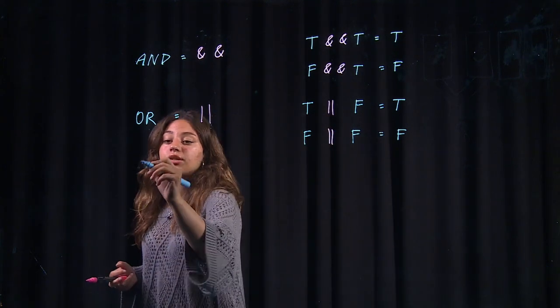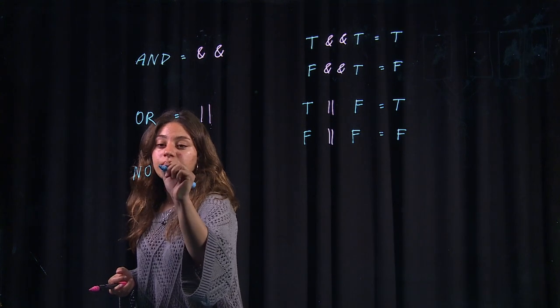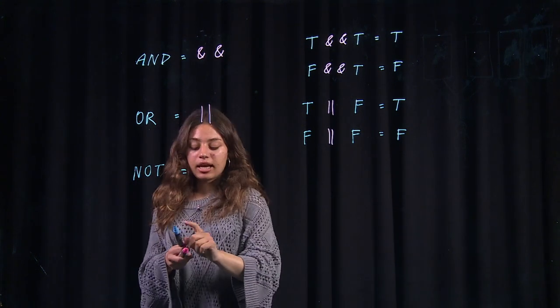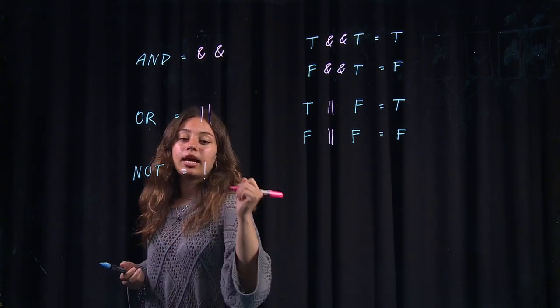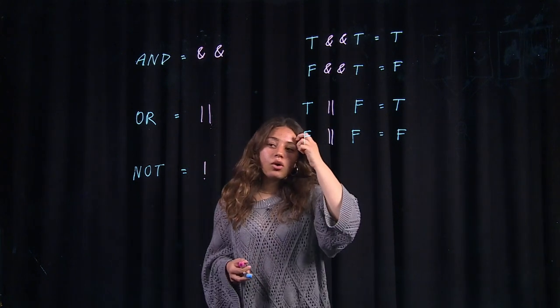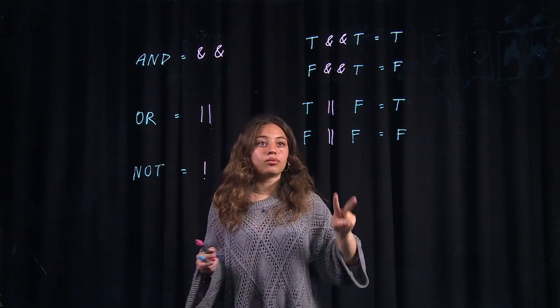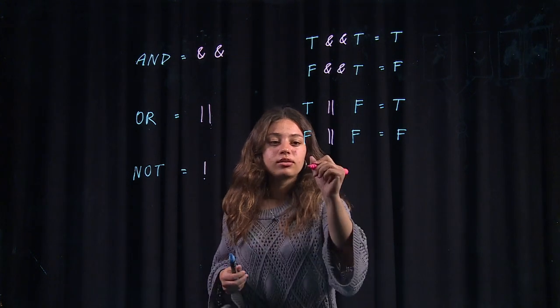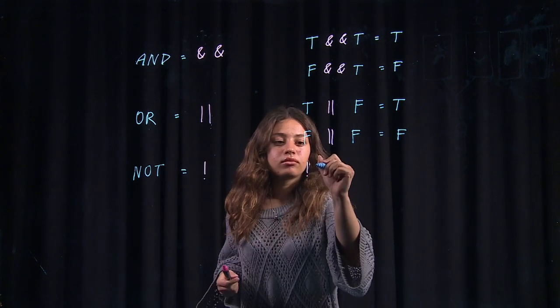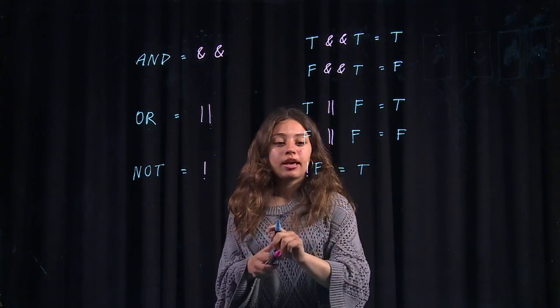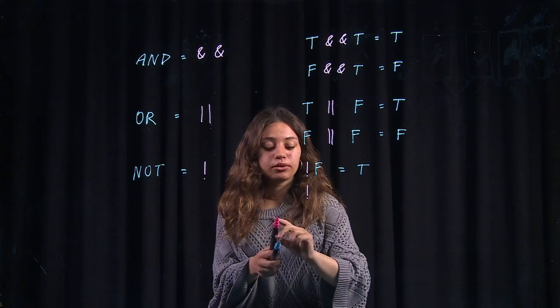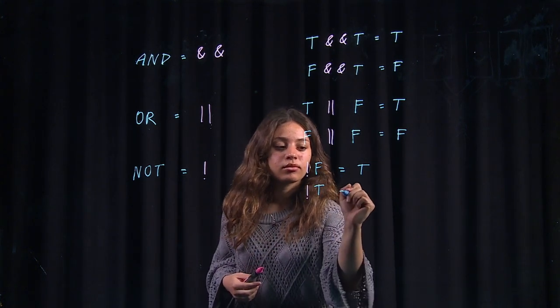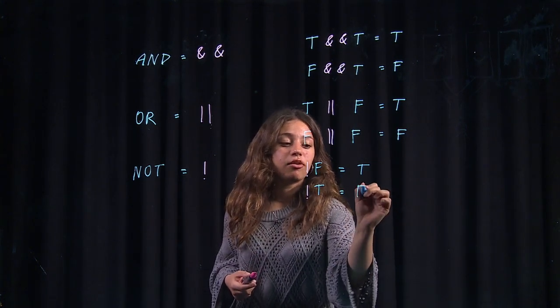And the final operator that's going to be very useful, in plain English, we say not. And it's denoted by an exclamation point. So you can think of not as reversing a symbol. If I have not false, that is going to equal true. If I have not true, that is going to equal false.